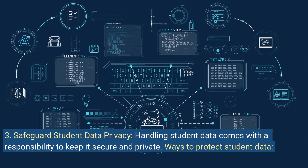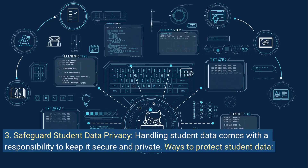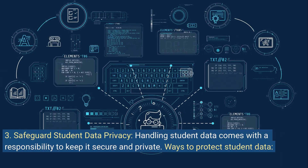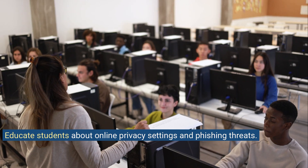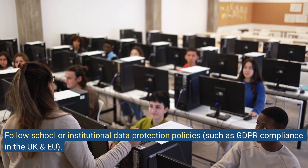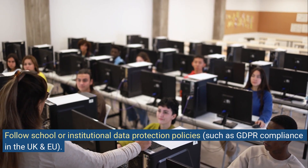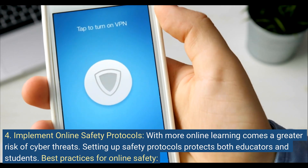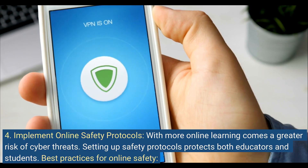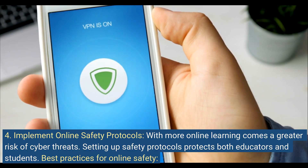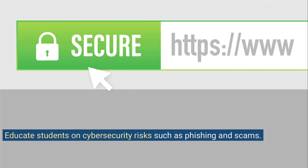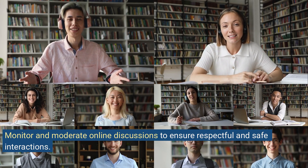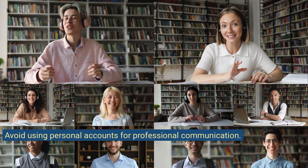Safeguard student data privacy. Handling student data comes with a responsibility to keep it secure and private. Ways to protect student data: use secure platforms approved by your institution, avoid sharing personal student data in public online spaces, and educate students about online privacy settings and phishing threats. Follow school or institutional data protection policies, such as GDPR compliance in the UK and EU. Implement online safety protocols — with more online learning comes greater risk of cyber threats. Use strong passwords and enable two-factor authentication, educate students on cybersecurity risks such as phishing and scams, monitor and moderate online discussions, and avoid using personal accounts for professional communication.